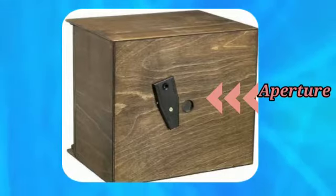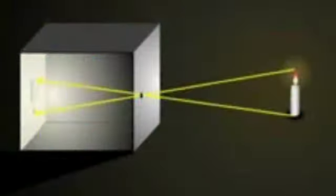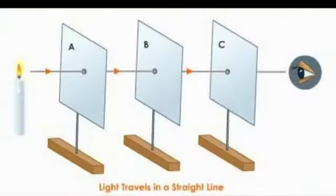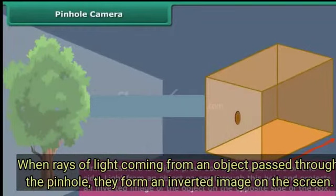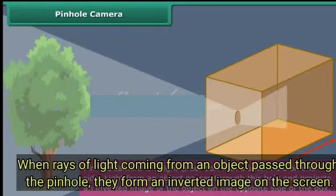The opposite face to the pinhole acts as the screen. A pinhole camera works on the principle of rectilinear propagation of light. When rays of light coming from an object pass through the pinhole, they form an inverted image on the screen.